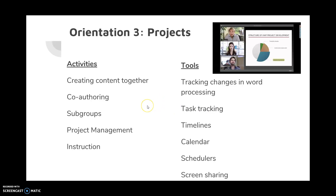Orientation three for your community is projects. Do you want to create content together? Do you want to co-author and provide instruction? If so, the tools you would need are a change tracking system or a task tracking system along with timelines, scheduling tools, a calendar, and screen sharing capability.